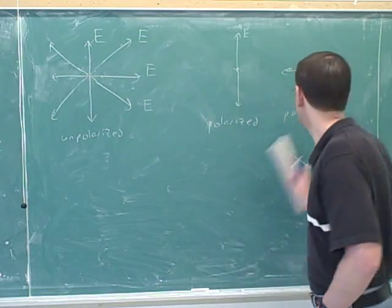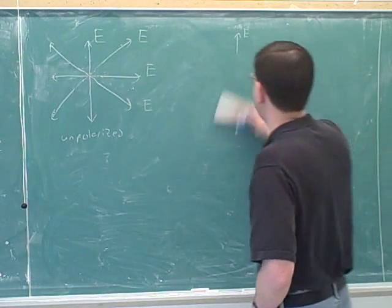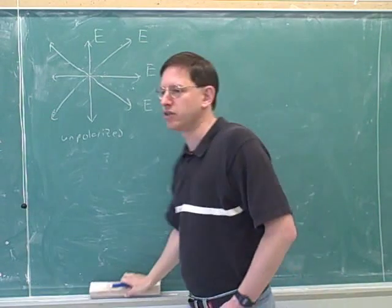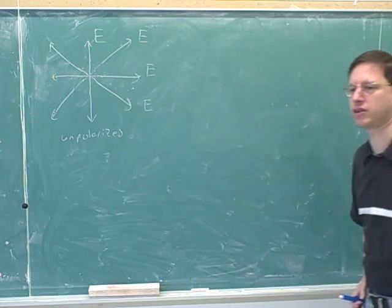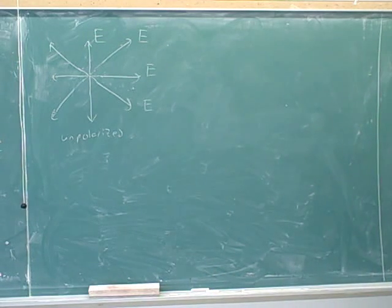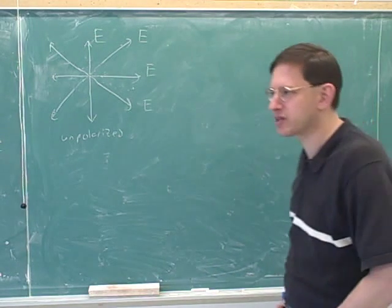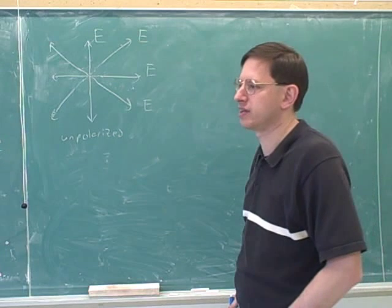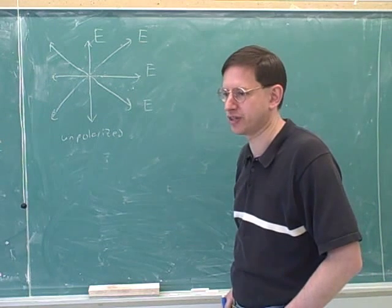How do we get polarized light? We use a polarization filter — something that only allows the electric fields through in a certain direction.